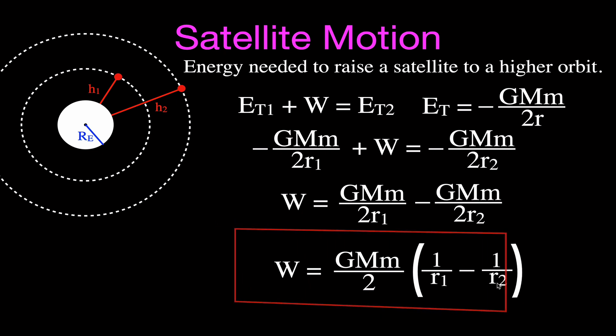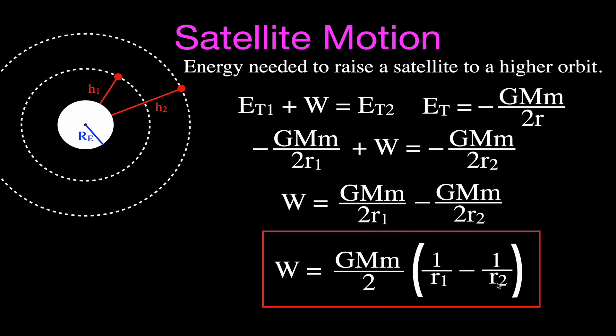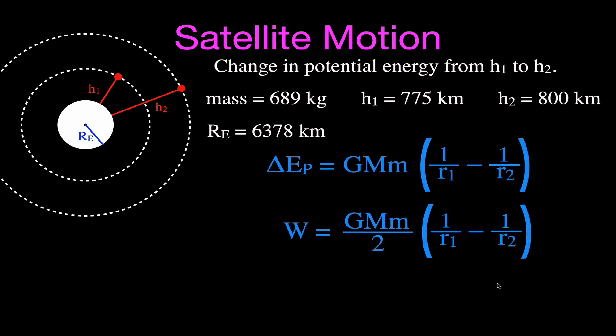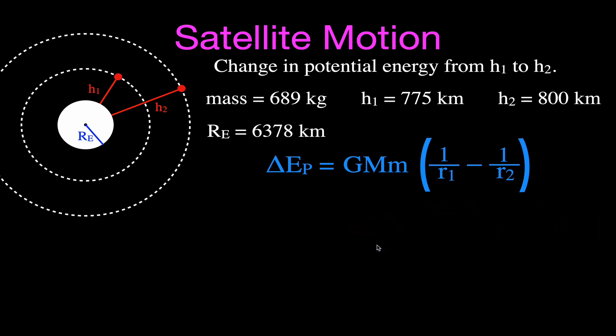This is the equation we use to find the amount of work needed to raise a satellite to a higher orbit. The two equations look very similar to each other: the change in potential energy uses GMm × (1/r1 − 1/r2), while the work equation uses GMm/2 × (1/r1 − 1/r2). That means the amount of work we do is exactly half the change in potential energy, and you'll see that in the example we're going to do.